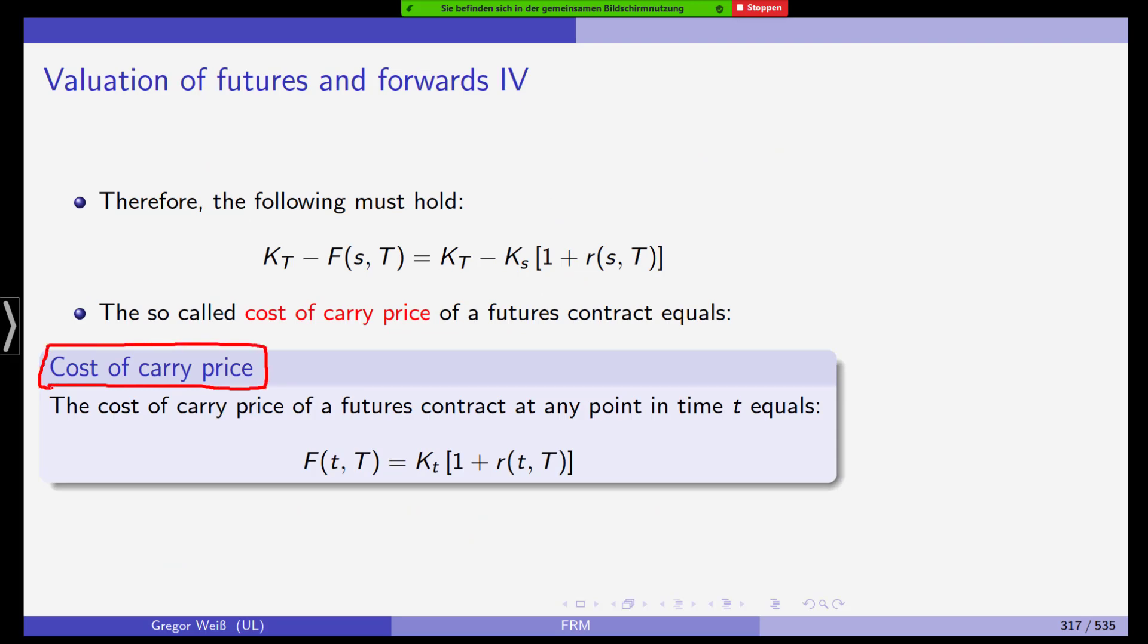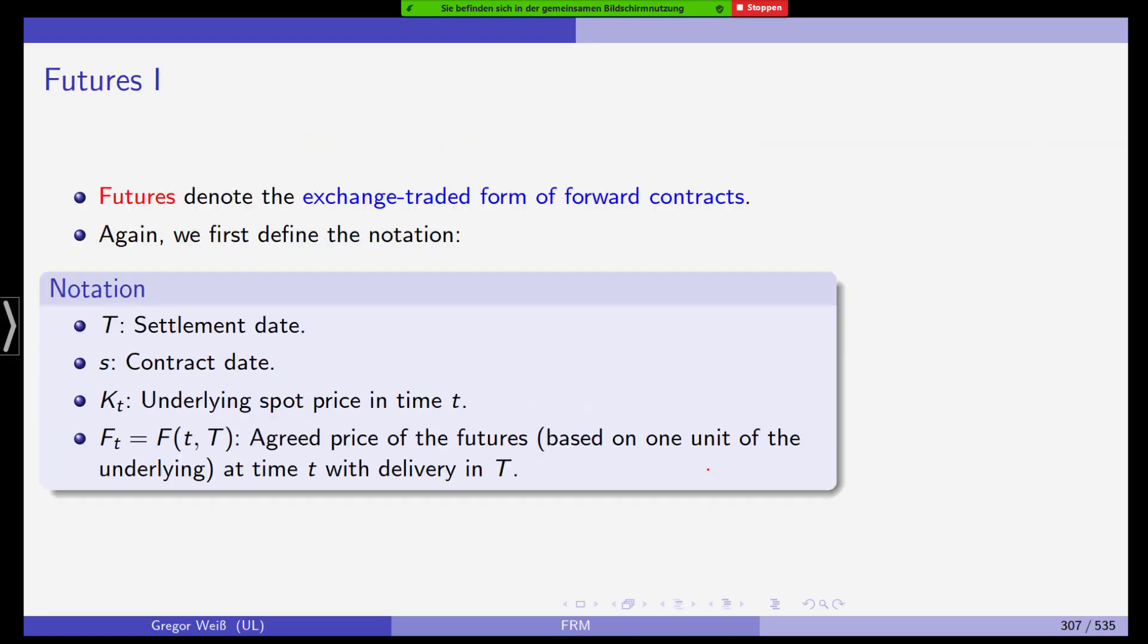We need to know what should the fair price of a forward or future be. And in the end, we will see that for a future contract, the cost of carry price of the future should be the spot price, KT, times one plus R. So the compounded spot price is the futures price. And you need to understand why this is the case, why we come up with this pricing formula for a futures contract and correspondingly for a forward contract. And we will discuss this in detail next week.